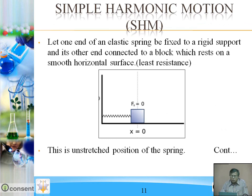Simple harmonic motion — SHM. Let one end of an elastic spring be fixed to a rigid support and its other end connected to a block which rests on a smooth horizontal surface. The surface is smooth to make resistance least, so all the applied energy is utilized for the displacement of the block rather than overcoming resistance.